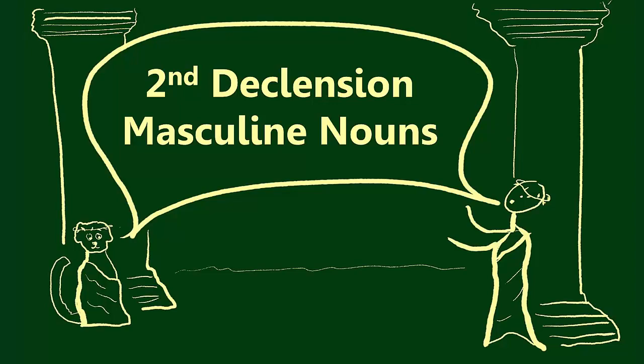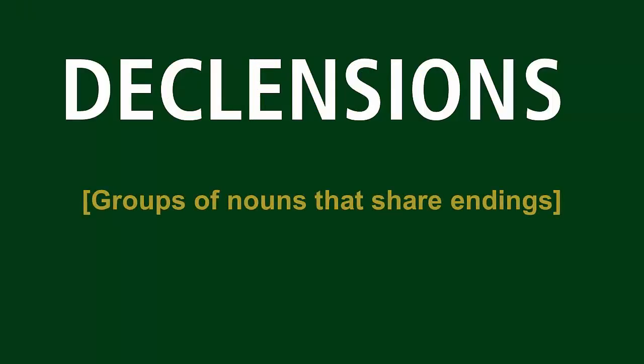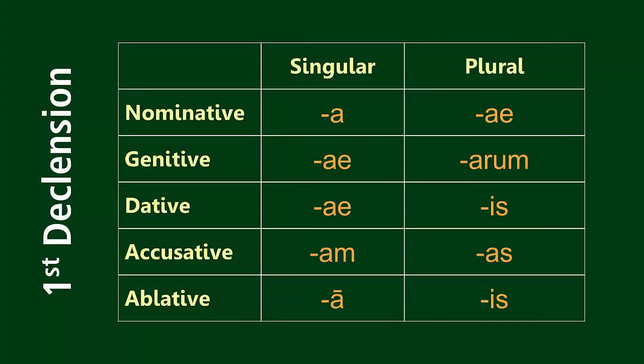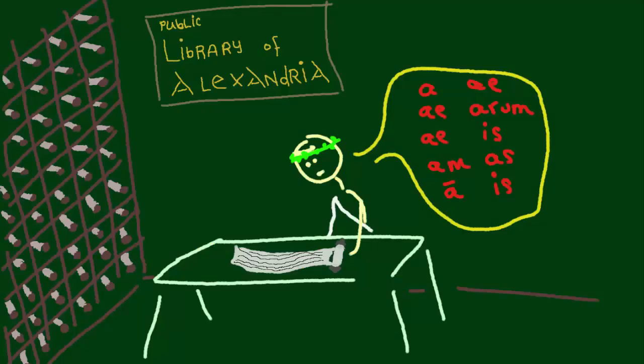Remember, last unit we learned that declensions are groups of nouns that share the same endings. We talked about how if a noun belongs to one declension, then it always belongs to that declension, and can never use the endings that belong to a different declension — the same way that dogs can't switch their breeds. We memorized the endings for first declension nouns last unit, and if you don't remember them, then the first thing you should do is to go back and review those endings.